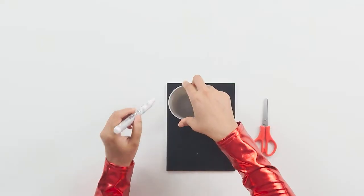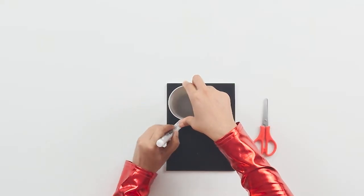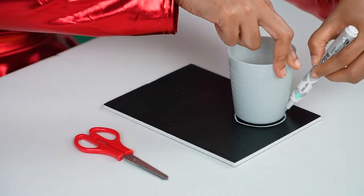First, we'll cut out three circles from our foam board. Now, since we're using scissors, make sure you have an adult around to help you. I'm going to use a cup and trace around it. There you go. Circle two.